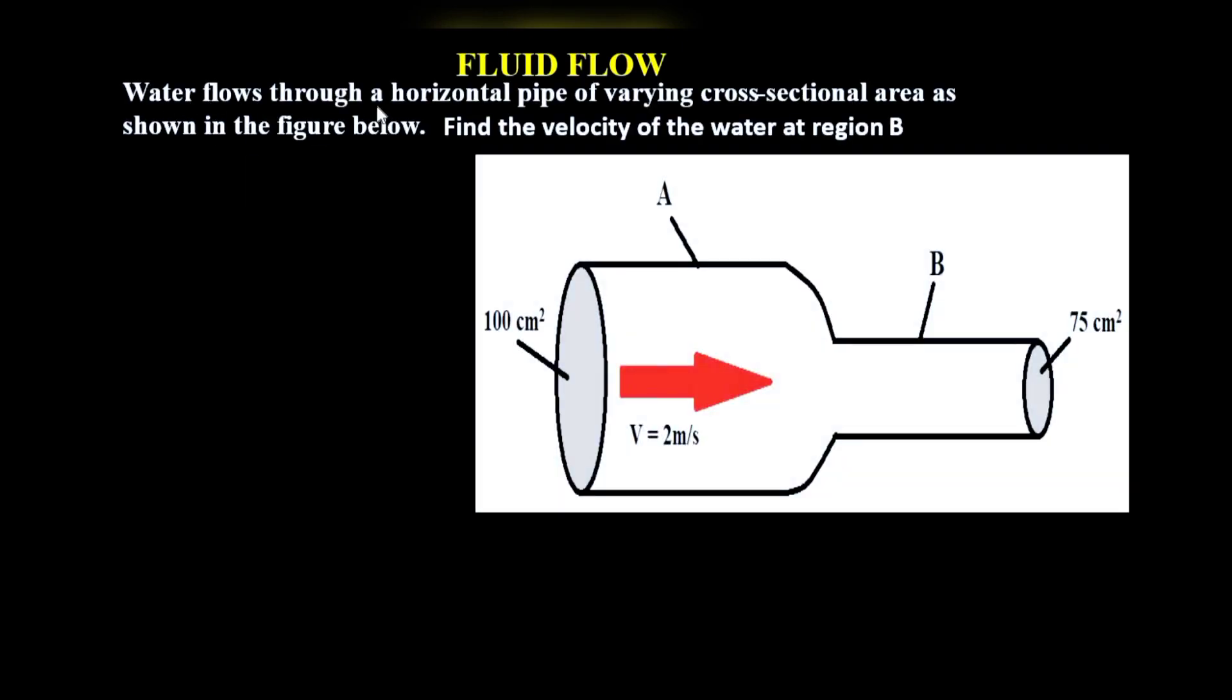Welcome. Today's question is about fluid flow. Water flows through a horizontal pipe of varying cross-sectional area as shown in the figure below. Find the velocity of water at region B. We have a pipe with varying cross-sectional area.